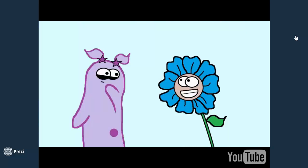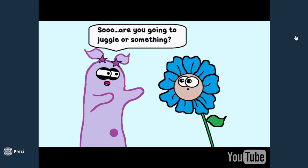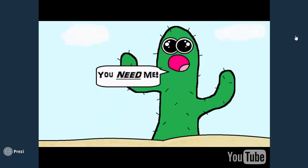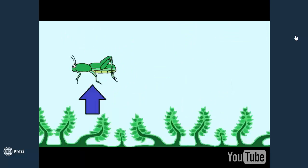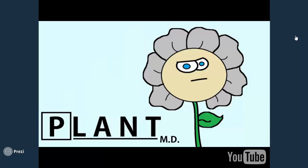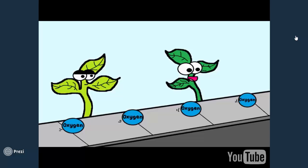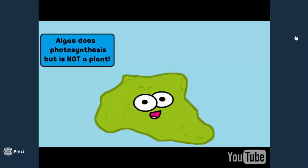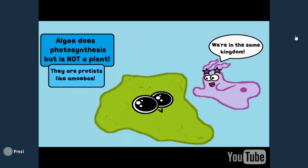Plants might not seem all that exciting, and you might wonder why you must learn about plants. But plants are so important for life. They are producers, which means they are the main support for food webs. Many medications we have today are derived from plants. They produce oxygen for us to breathe through photosynthesis. Not everything that does photosynthesis is necessarily a plant — algae, for example, does photosynthesis and is not a plant — but plants do play a major role in oxygen production.